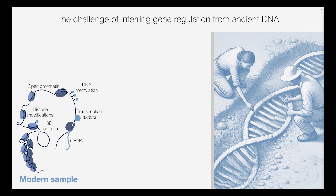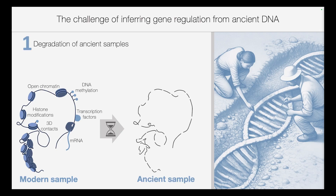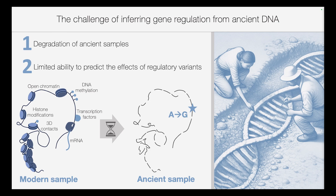In modern samples, we have plenty of regulatory marks that help us decipher the level of activity of each gene in the genome. Ancient samples, on the other hand, go through rapid post-mortem degradation, leaving us with only the naked and degraded DNA sequence. And this is further exacerbated by our limited ability to predict the effects of regulatory variants. So despite the fact that gene regulation is encoded within the DNA itself, our ability to read this code is very limited, and as a result, we know very little about how genes worked in archaic humans.